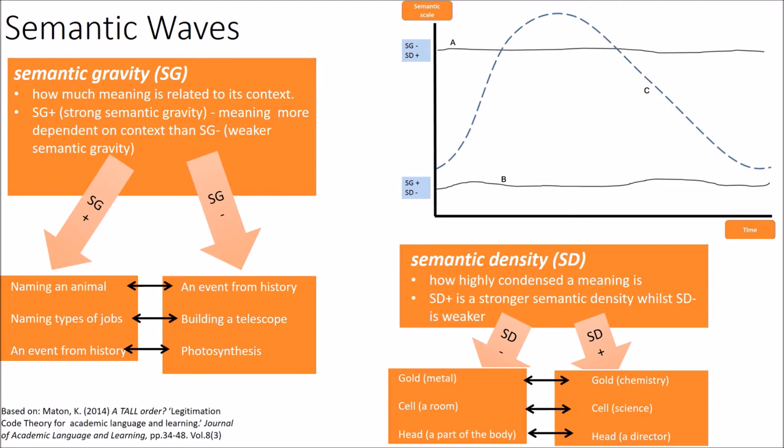The other concept Maton talks about is that of semantic density, that is, how dense the meaning of a word is. For instance, gold, when taking the general non-scientific meaning of metal, has a weaker density, making it SD-, but it is SD+, when used in the field of chemistry in science.